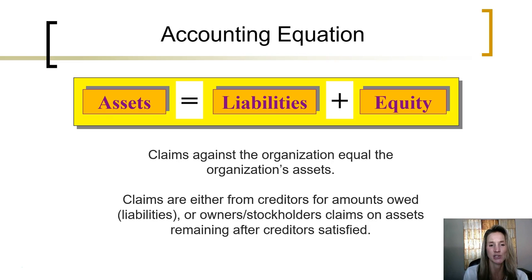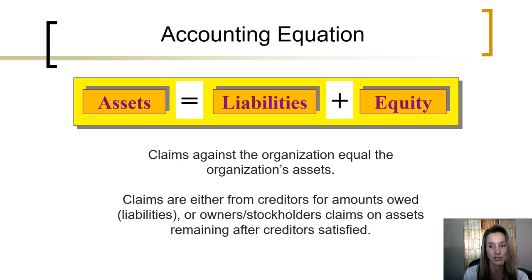Essentially, what this equation says is that claims against the organization must always equal the organization's assets. The claims against the organization are either from creditors for amounts owed, such as liabilities, or the owner's or stockholder's claims on assets that would remain after all creditors are satisfied.